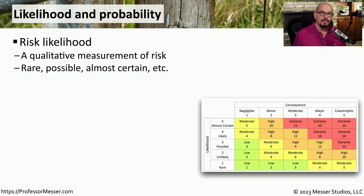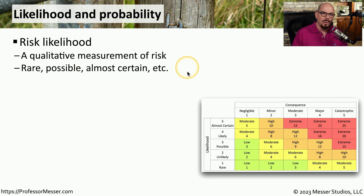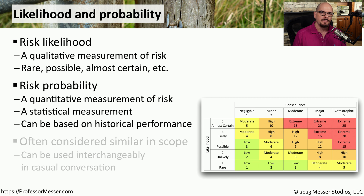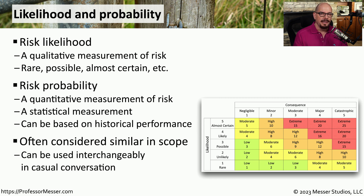Our risk calculations tend to take into account likelihood and probability. The likelihood of a risk is a qualitative value — we might consider a risk to be rare, possible, almost certain, or some other qualitative measurement. Risk probability tends to be a quantitative number, so we can associate a statistic or measurement to that specific risk. We can often base this on historical performance, and in some cases, expected future performance. We will often use these two terms interchangeably, and sometimes we might calculate a risk probability and then associate a likelihood based on that value.